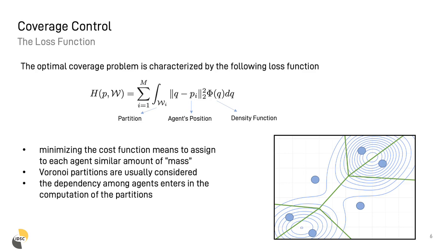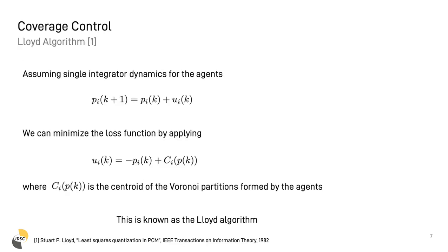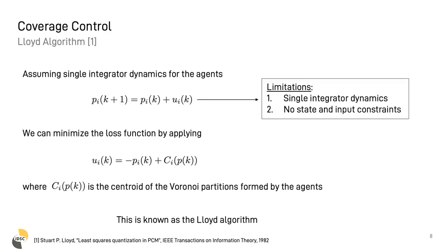It is also important to notice that an intrinsic dependency among all agents enters in the computation of the partitions. As to compute Voronoi partition is crucial to know the position of all agents. A classic solution to solve this optimization problem is given by the Lloyd algorithm. If you assume the agent's dynamics to be a single integrator, we can minimize the cost function by moving the robots to the centroid of the current partitions. However, the assumption that the agents are a simple integrator dynamics and no state and input constraints can be quite restricted in many robotic applications.